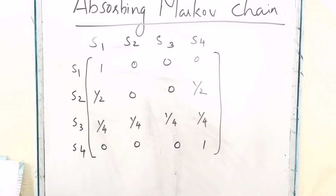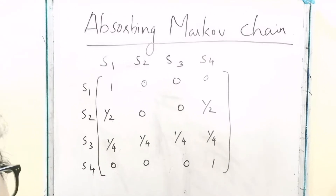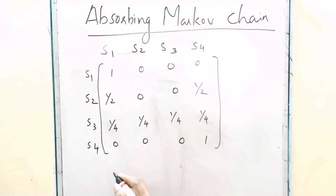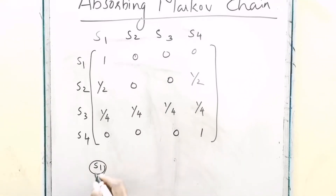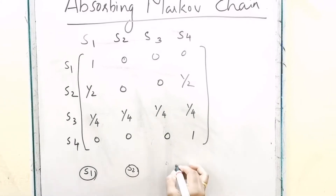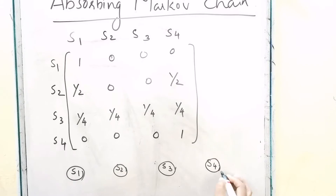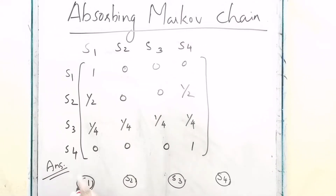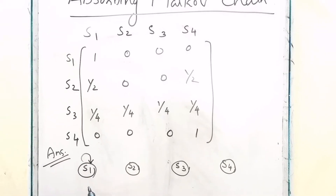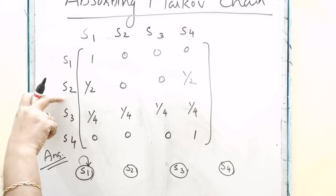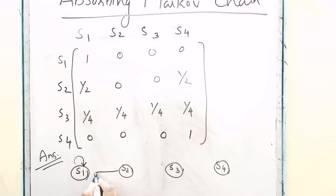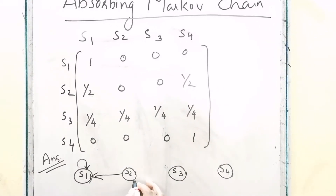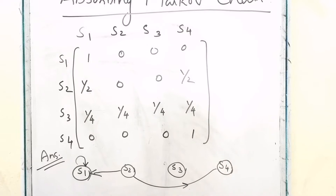We have to check whether this matrix is from an absorbing Markov chain. Let's draw the diagraph. We have S1, S2, S3, and S4. From S1 to S1 is possible. From S2 to S1 is possible, and S2 to S4 is also possible.